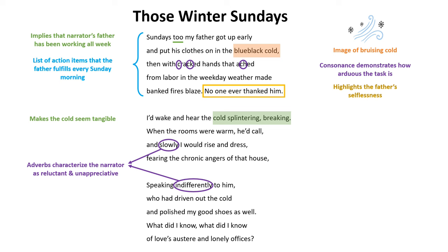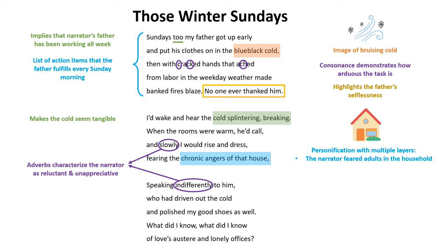Later, the narrator personifies the house by mentioning its 'chronic angers.' There are multiple layers within this literary device. This reference to chronic anger could mean that the narrator fears adults in the household because they seethe in their own anger. Or it could mean that the family constantly faces issues in this old house, which probably needs a lot of repair.